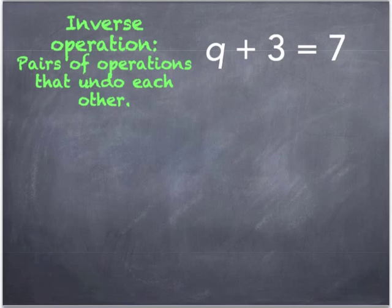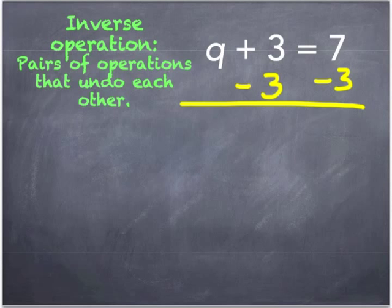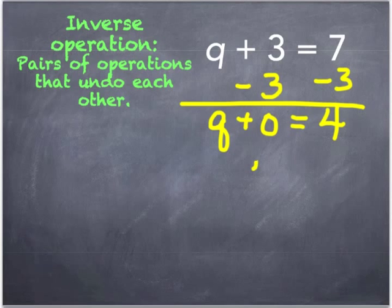Like the name says, it's just one step. In order to solve this, subtract three from both sides. On the left-hand side of the equation we'll be left with q plus zero, and on the right-hand side we'll be left with four. We're going to simplify this to q equals four.